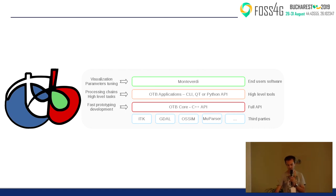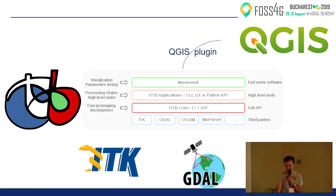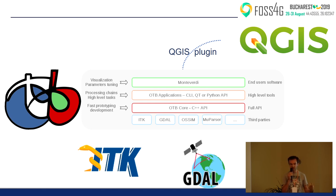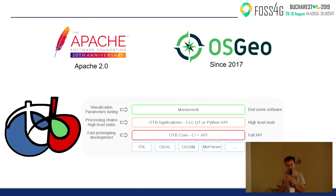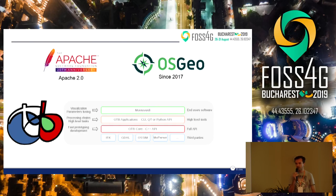Over that, we have a very efficient image viewer called Monteverdi. Here are some libraries you may know, like GDAL and ITK — we are built on the shoulders of these giants. We also have a link with QGIS because there is a plug-in that allows you to use Orfeo Toolbox applications directly from QGIS, which we'll talk about later. Orfeo Toolbox has been a part of OSGeo for three years now, and is licensed under the Apache V2 license.